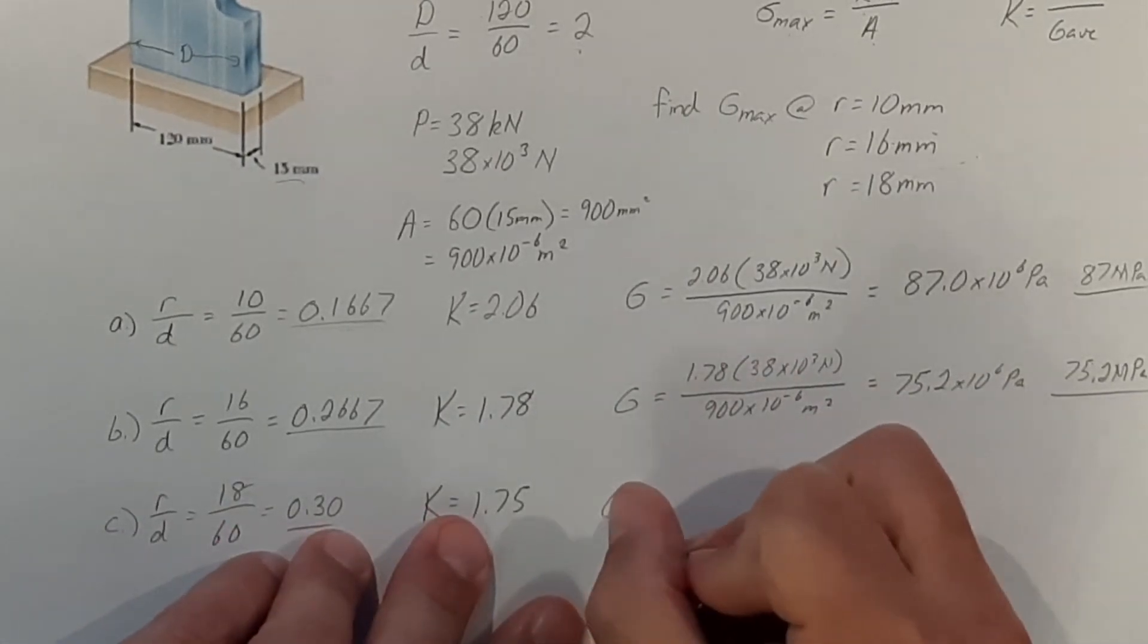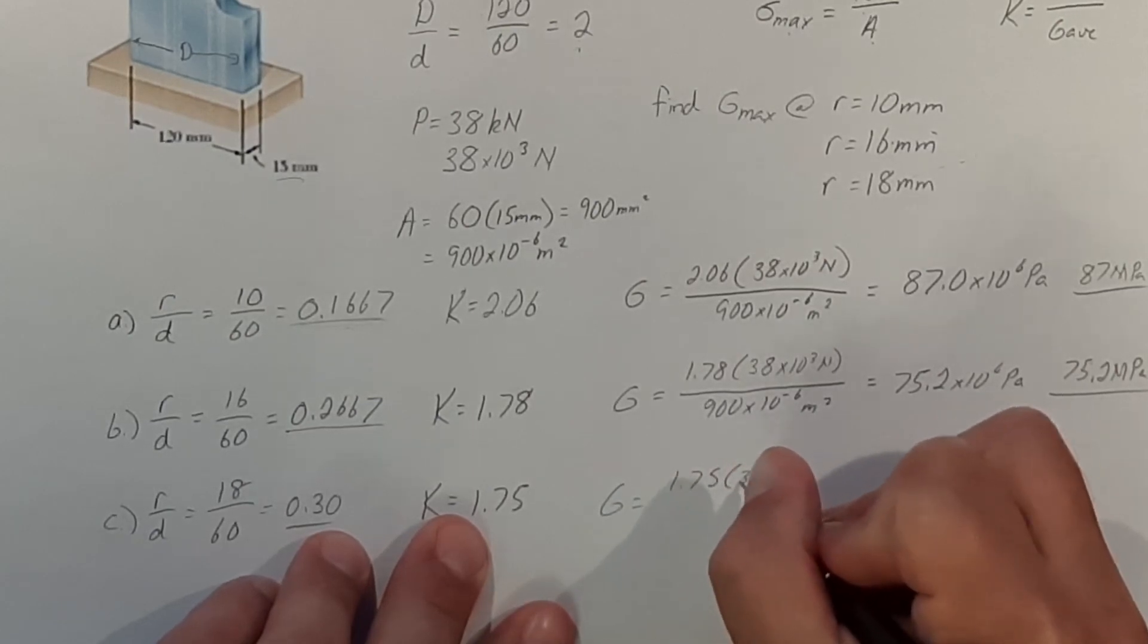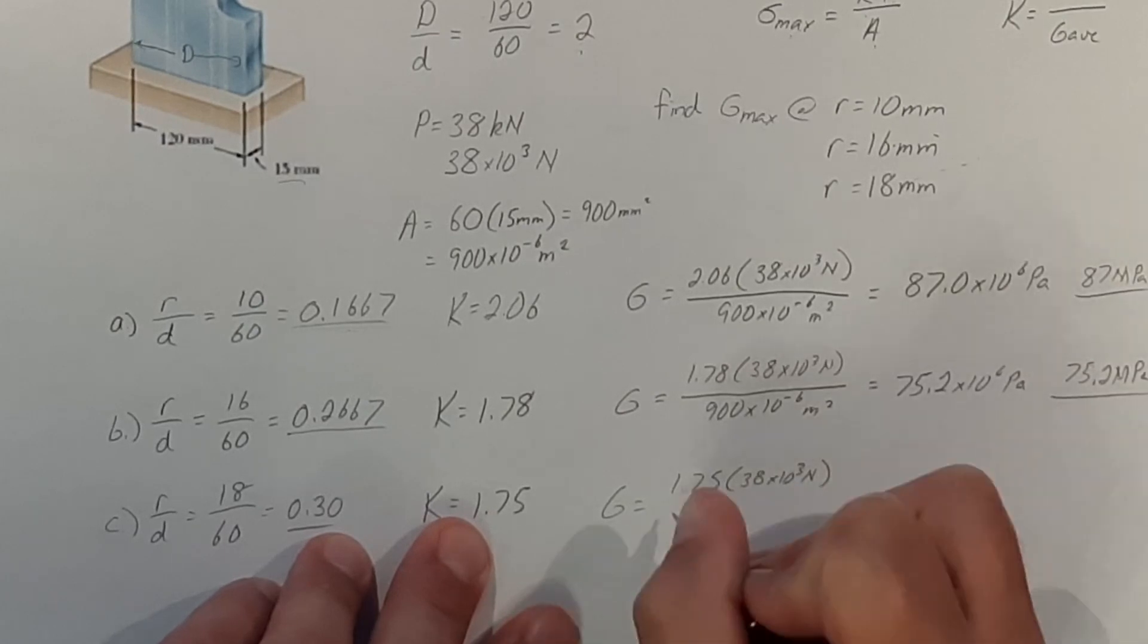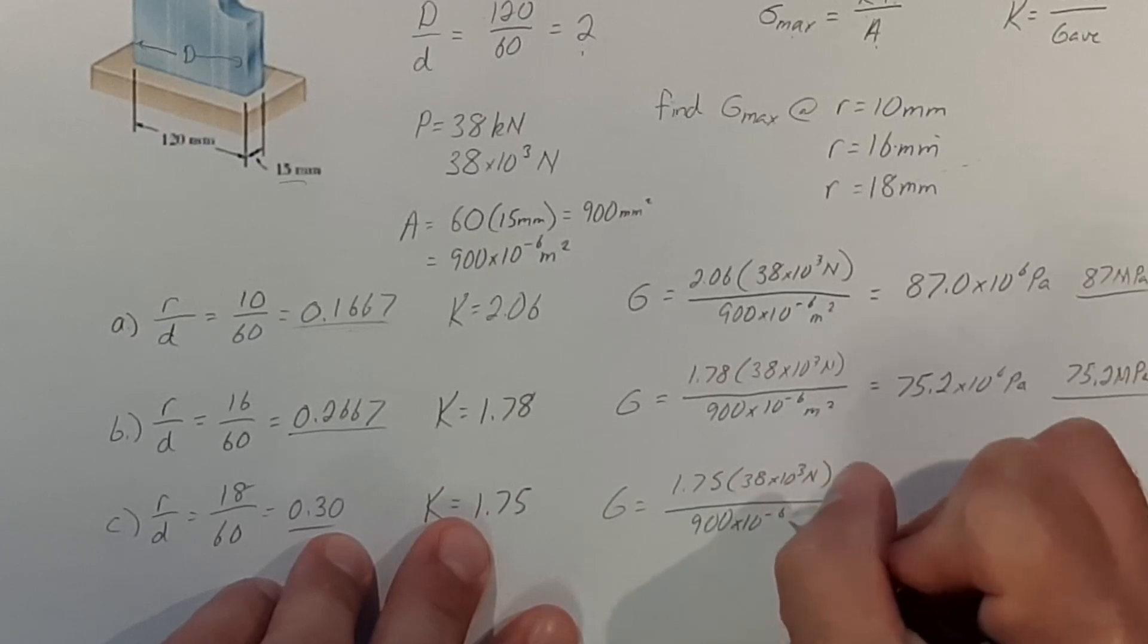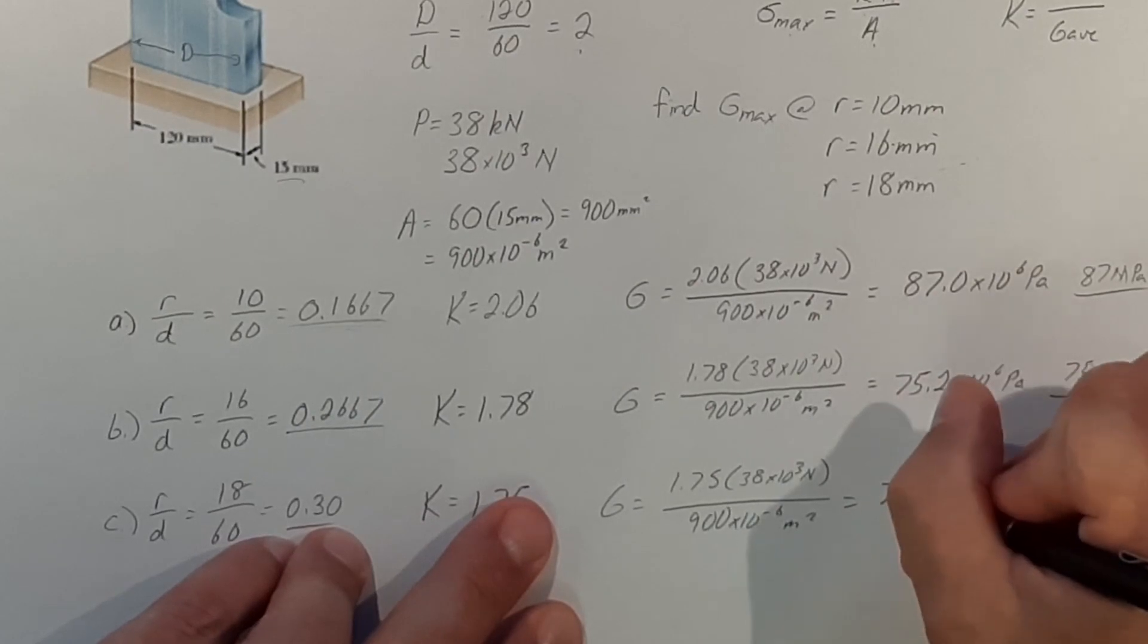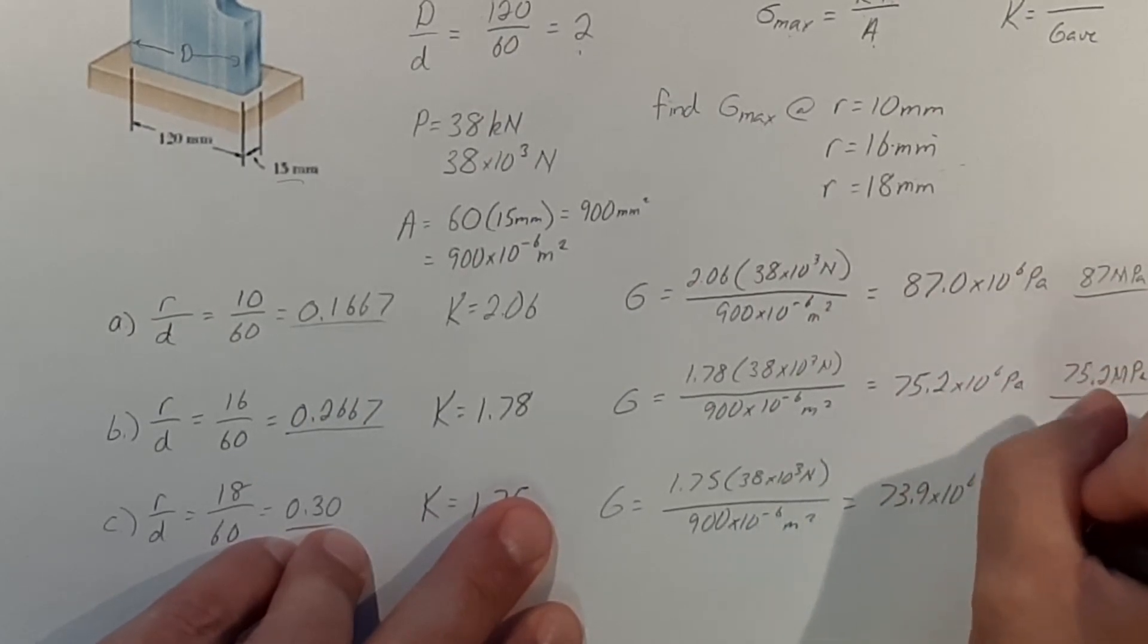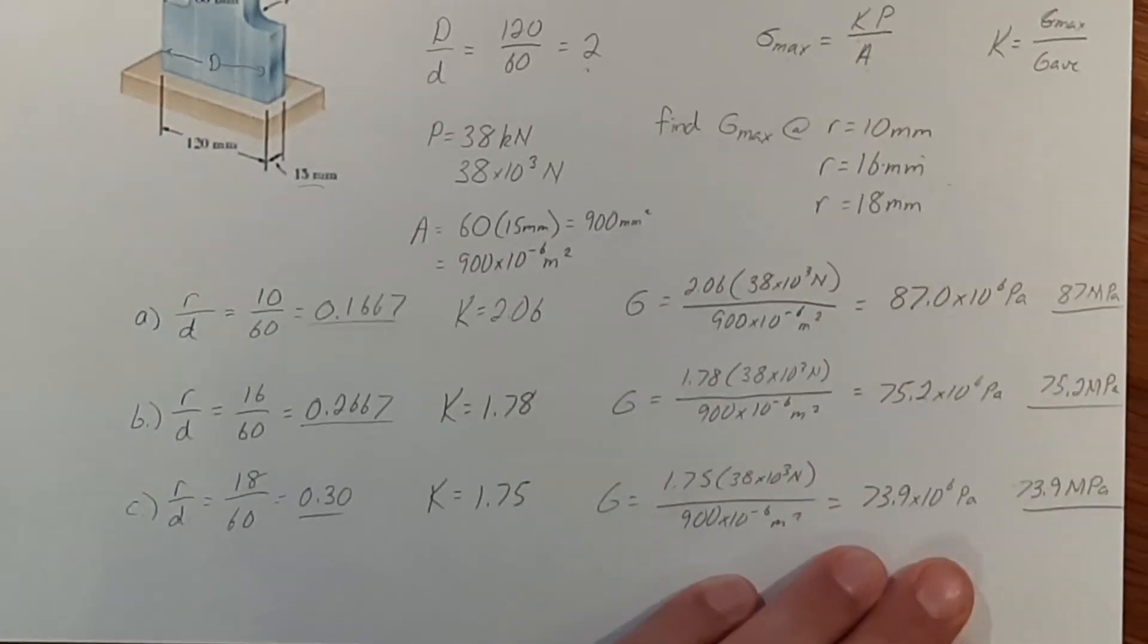Put all that into our equation. And that is 1.75 times 38 times 10 to the 3rd newtons, all over 900 times 10 to the negative 6 meters squared. And that gives us a total of 73.9 times 10 to the 6th pascals or 73.9 megapascals.